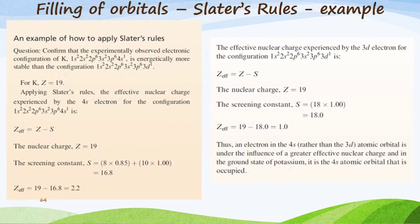Let's work with an example so that you can see what I'm referring to. The question states: confirm that the experimentally observed electron configuration for potassium has the 4s electron filled first before the 3d electron is filled. For potassium the atomic number is 19. We've got this equation Z* = Z - σ. The nuclear charge is equal to the atomic number which is 19.